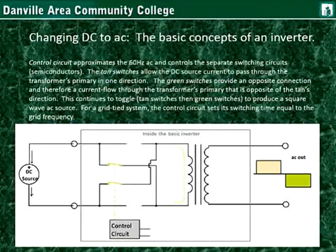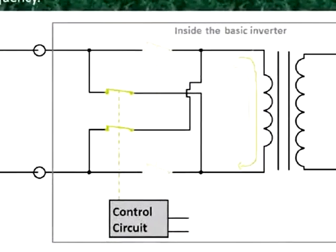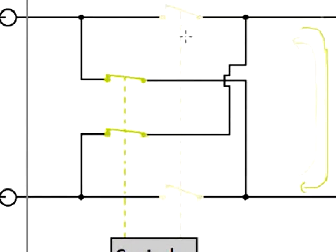So we understand how to change AC into DC. But how do we change a plain DC source — a source with constant polarity like a battery where the negative is always the source of electrons and the positive is always where they want to go — into alternating current? We'll look at the basic concepts of an inverter. The control circuit approximates the 60 Hz AC and controls separate switching circuits, which are semiconductors — maybe MOSFETs. They're solid state, meaning no mechanically moving parts, but they electronically control the flow of electrons. We're just drawing them as regular switch symbols.